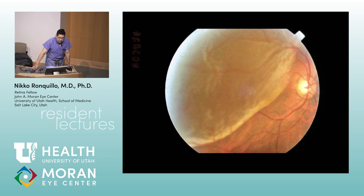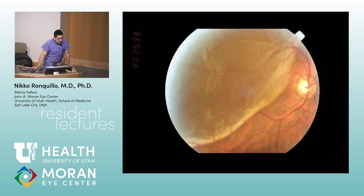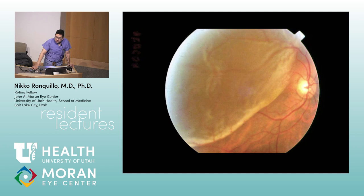Next — retinal detachment. What are the predisposing lesions? High myopia and lattice are predisposing. Vitreoretinal tufts are predisposing. Enclosed ora bays and meridional folds are predisposing. Cobblestone degeneration — not predisposing. Reticular degeneration and peripheral cystoid degeneration — not predisposing. Those distinctions do come up on the exam.